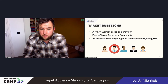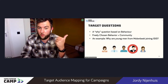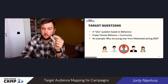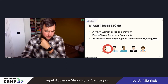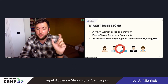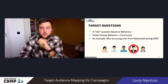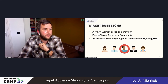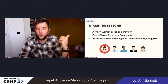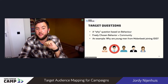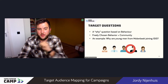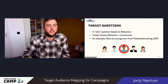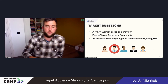An example could be: 'Why are young men from Molenbeek' — that's a neighborhood in Brussels — 'joining ISIS?' So that's the community: young men in that specific neighborhood. And joining ISIS is the freely chosen behavior. 'Why' starts every question in the map. Freely chosen behavior: these kids joining ISIS. The community is defined by young men from Molenbeek.